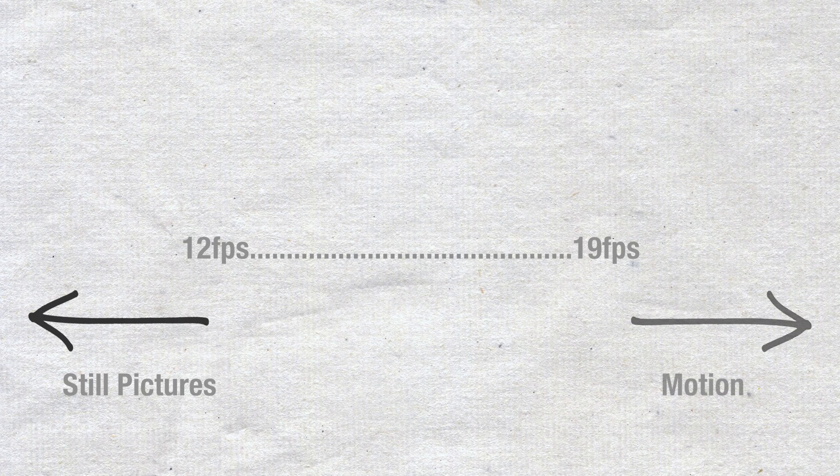The human eye is able to distinguish 12 pictures per second before it starts seeing motion. So any frame rate lower than 12 FPS and your brain will be able to tell that it's just a number of pictures. About 19 to 26 FPS is where the motion effect takes place and your brain starts seeing a moving scene.